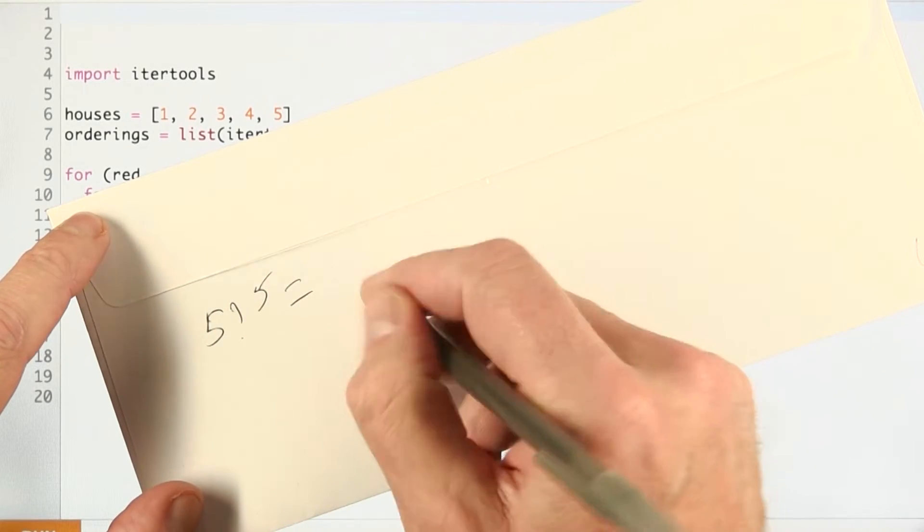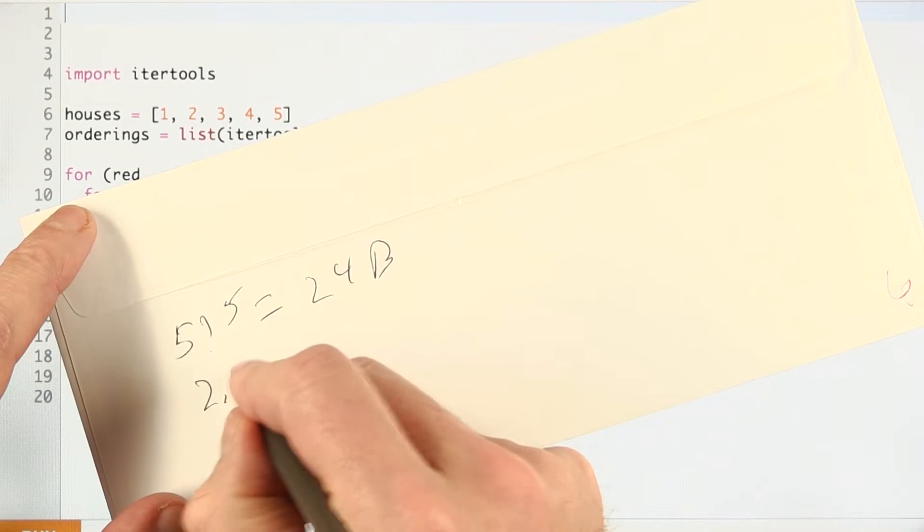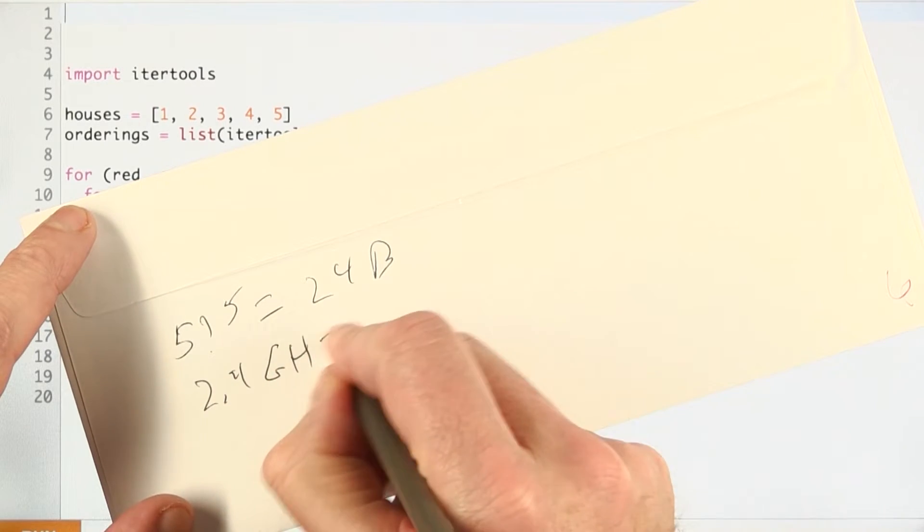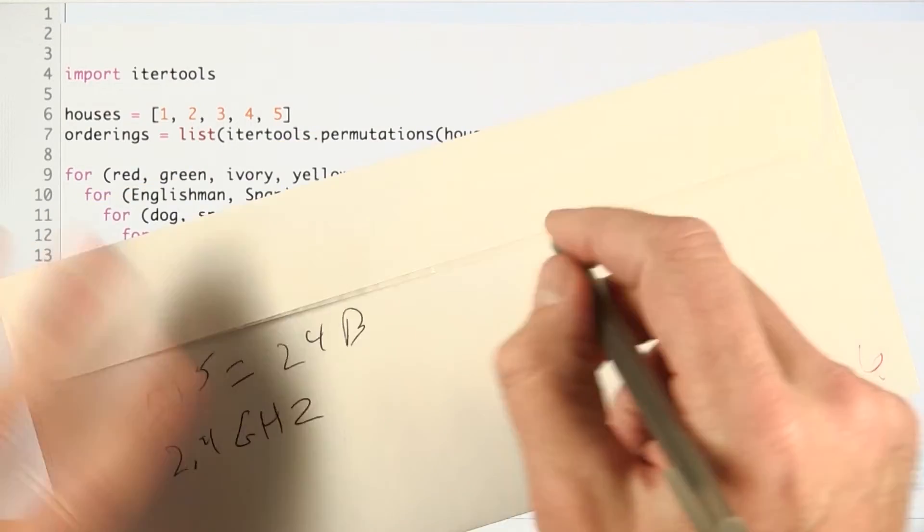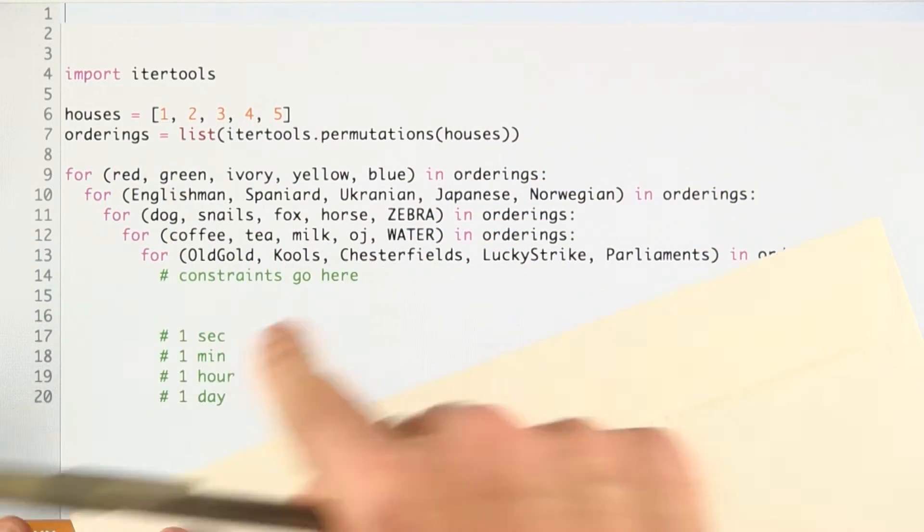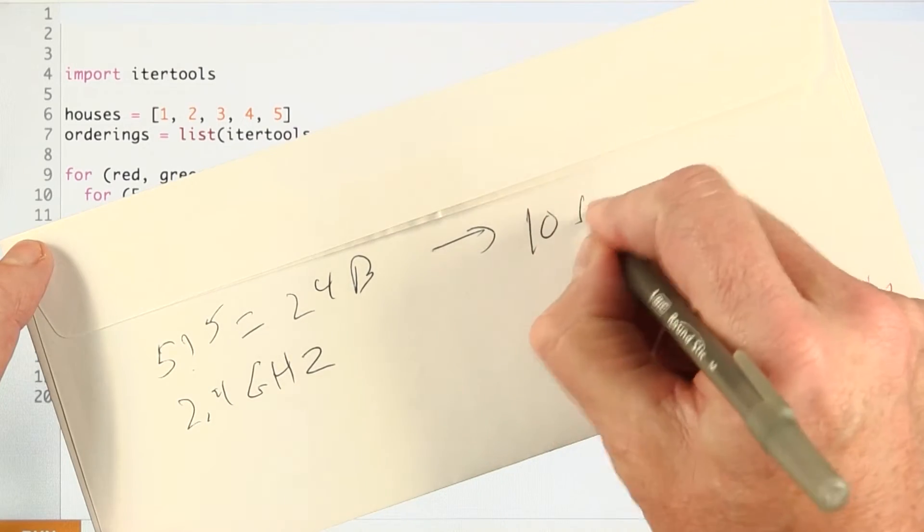5 factorial to the fifth was 24 billion, and if we assume we have a 2.4 GHz computer, which is fairly typical, then if all this could be compiled into one computer instruction, it would take 10 seconds.